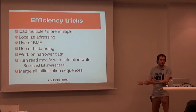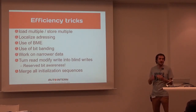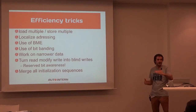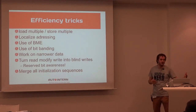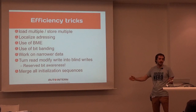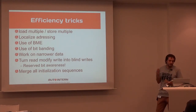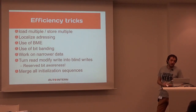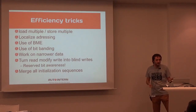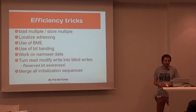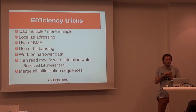Loading a 32-bit address, if you're using Thumb-2 with mostly 16-bit instructions, actually takes a couple of instructions. So if you already have a neighboring register and can just add something to that, that's actually just one instruction — load-with-offset is one line. We can use bit banding to get around masking — not only atomic, also faster. Working on narrow data, same thing. Turn read-modify-writes into blind writes: not only atomic, also more efficient.